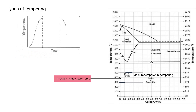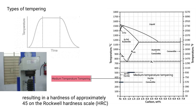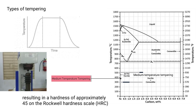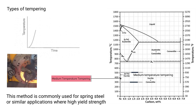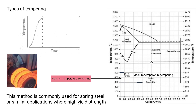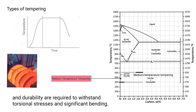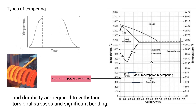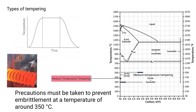Medium temperature tempering occurs within a temperature range of 300°C to 500°C, resulting in a hardness of approximately 45 on the Rockwell hardness scale. This method is commonly used for spring steel or similar applications where high yield strength and durability are required to withstand torsional stresses and significant bending. Precautions must be taken to prevent embrittlement at a temperature of around 350°C.